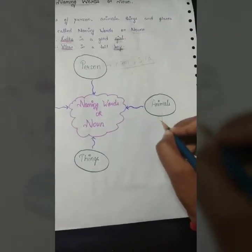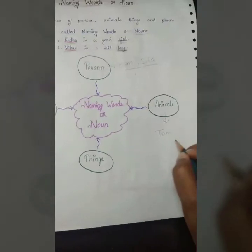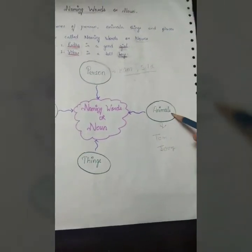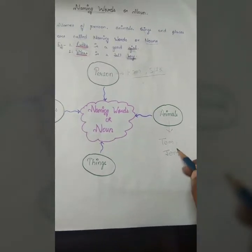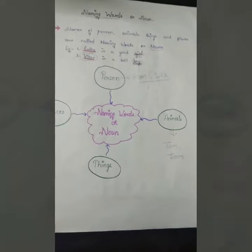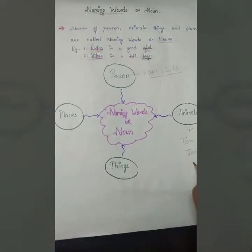Now, animals, animals, animals like Tom. Tom, Tom is a cat. Then, Jerry. Now, Jerry. So, animals, any of the animals. Kisi bhi cat ka name, kisi bhi rat ka name, ya kisi bhi dog ka name, ya joh bhi pet hai aap ke haan, uska naam. Okay? Ya kisi bhi animal ka name.